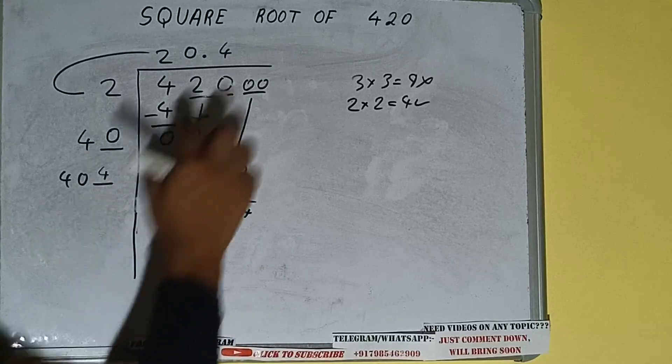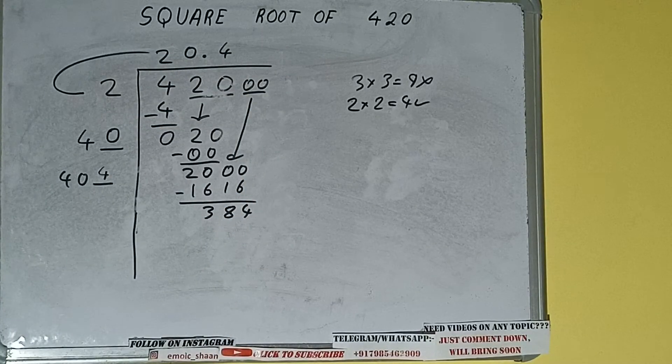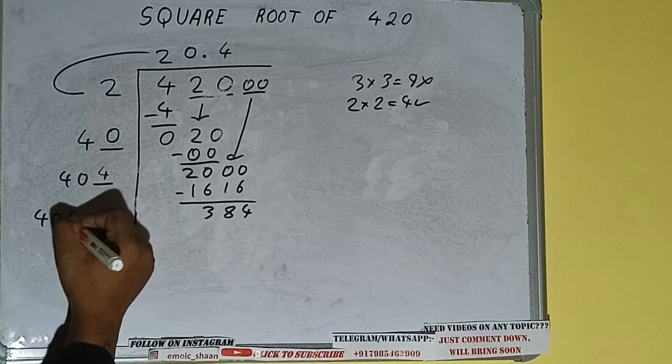Now 404 into 4 we did, so add both. So 404 plus 4 will be 408, and one digit extra.